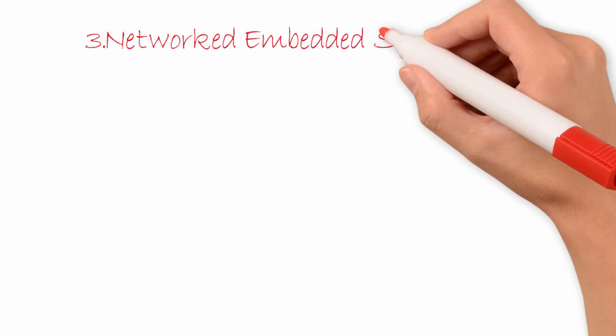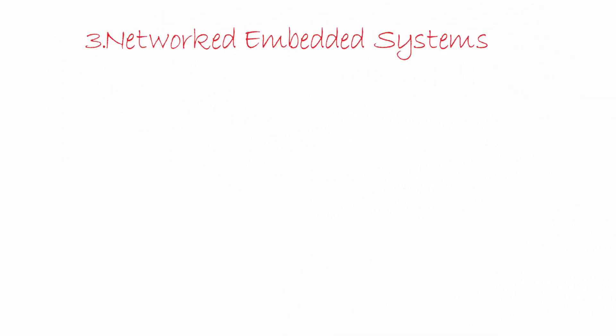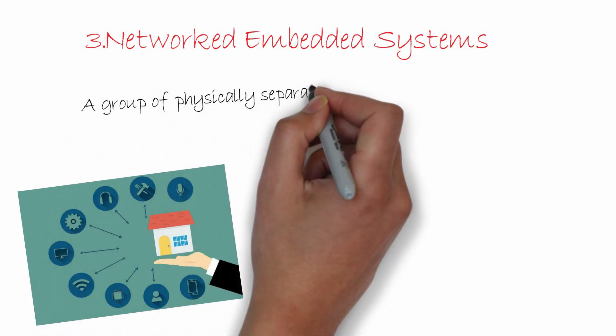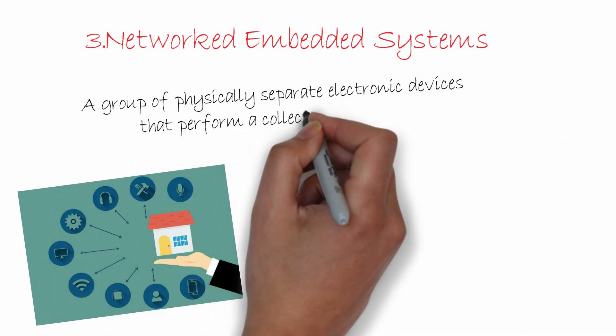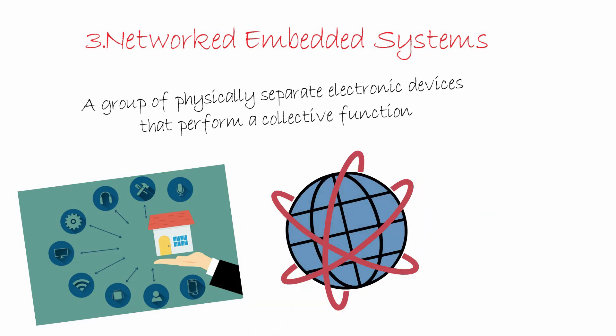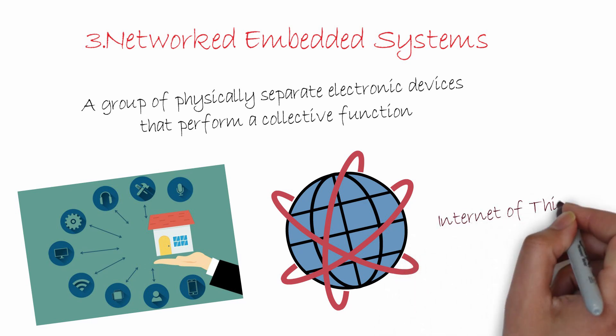Lastly, we have the class called networked embedded systems. A famous example is home automation, where several sensors are placed throughout your home and their collective duty is to perform home automation. This is the latest trend in the field, with more products combining electronics, programming, and networking all together. There is a special subclass where this network spans throughout the globe, popularly known as the Internet of Things, or IoT for short.